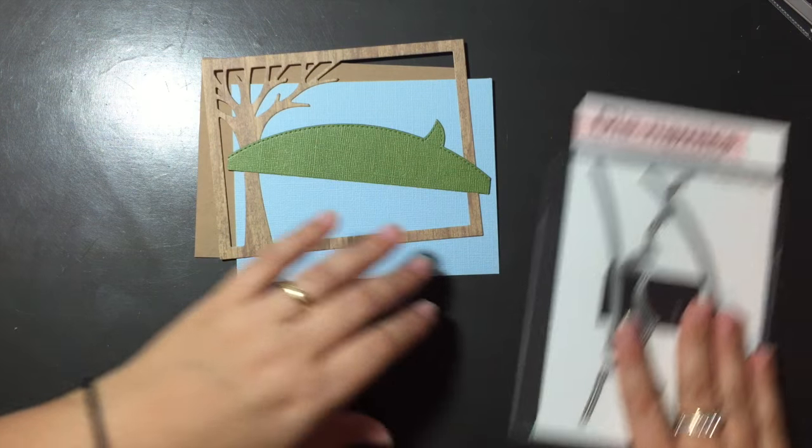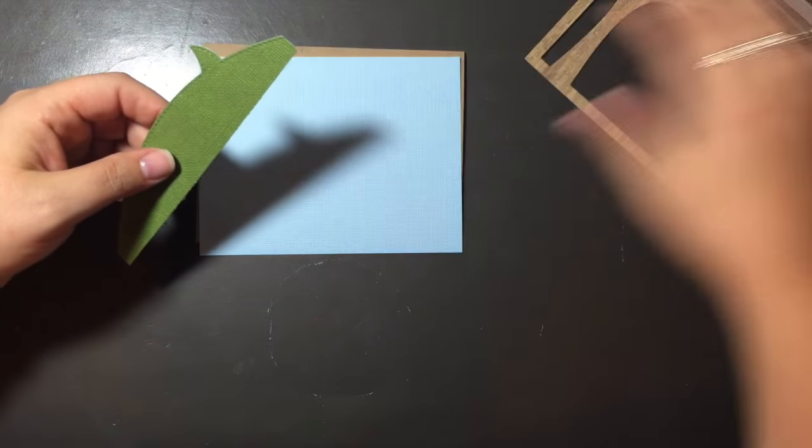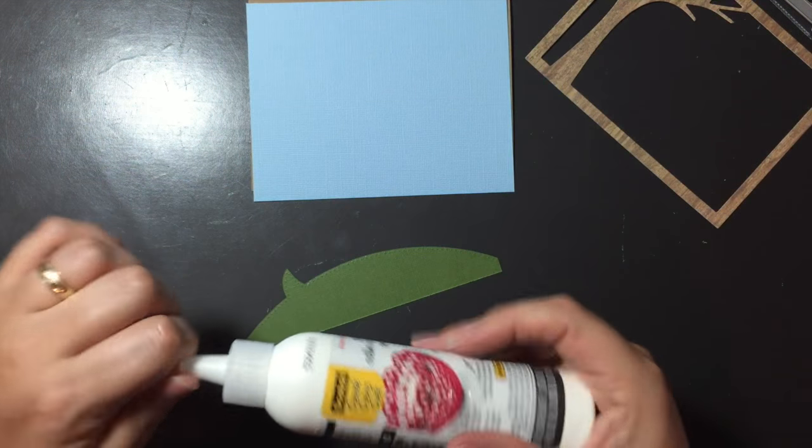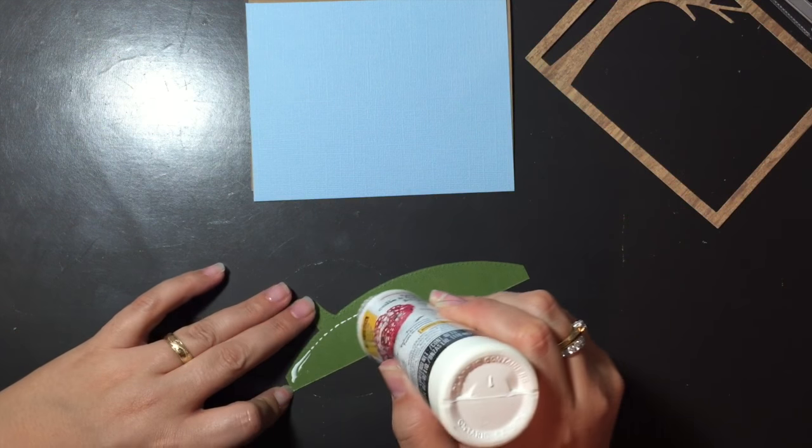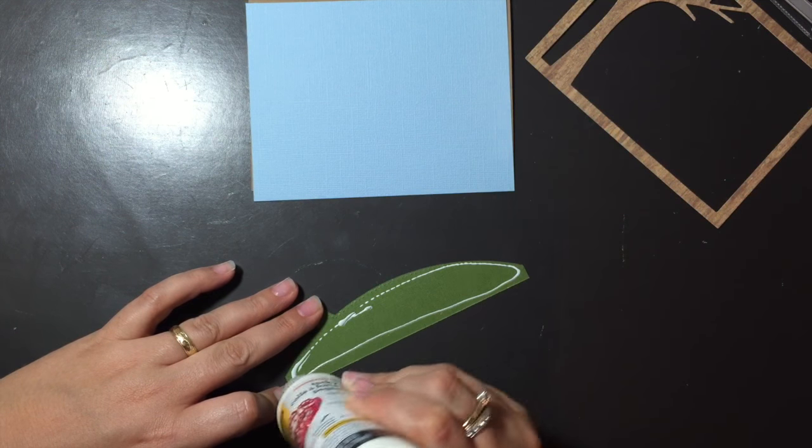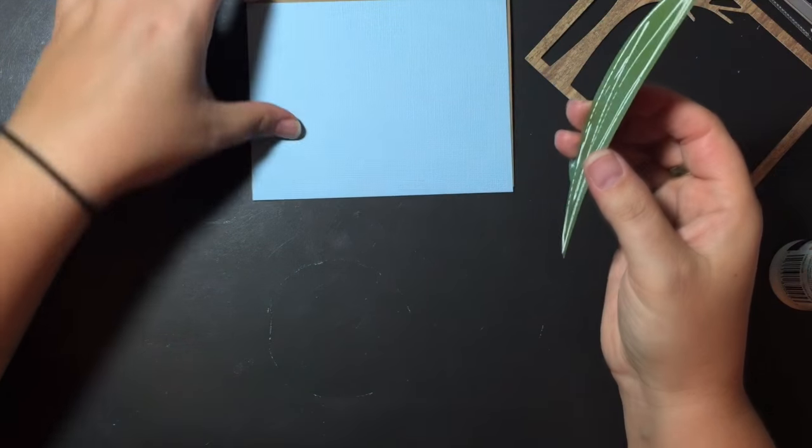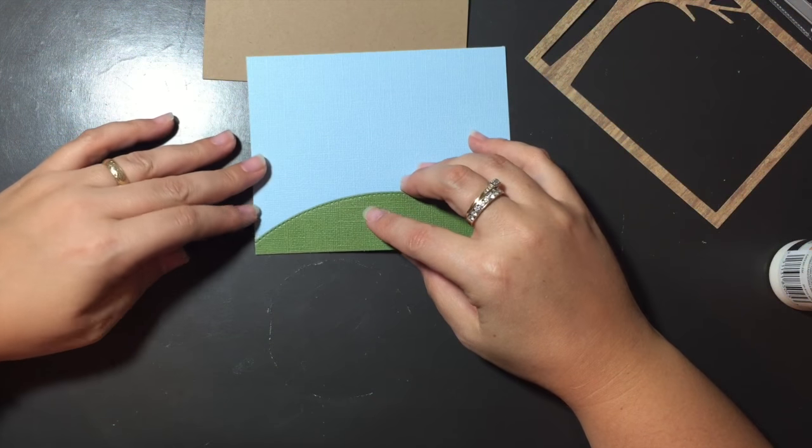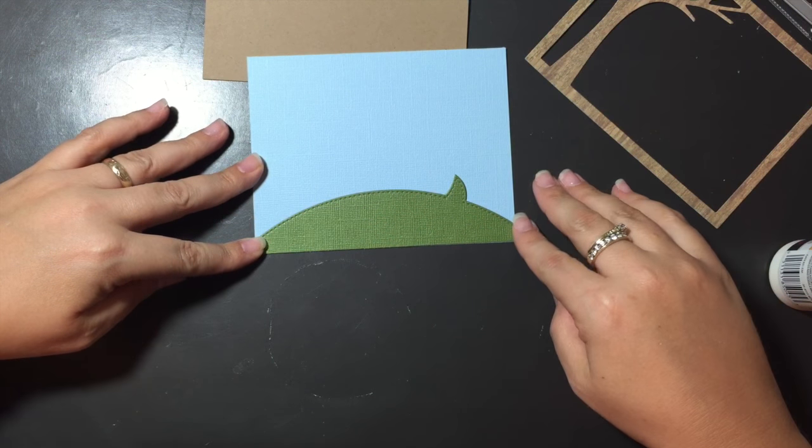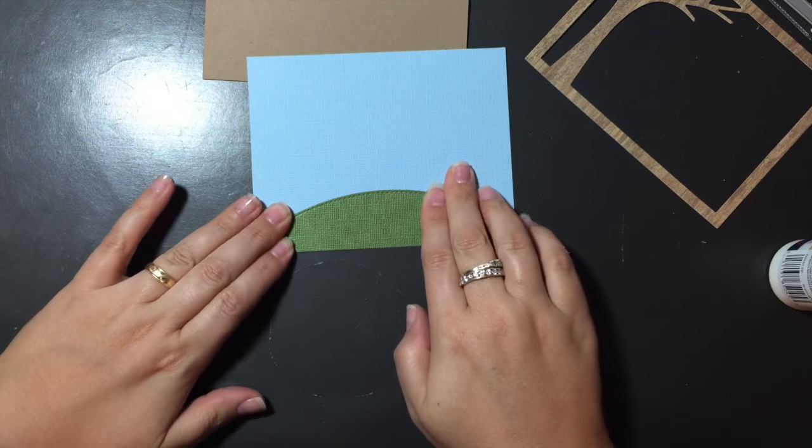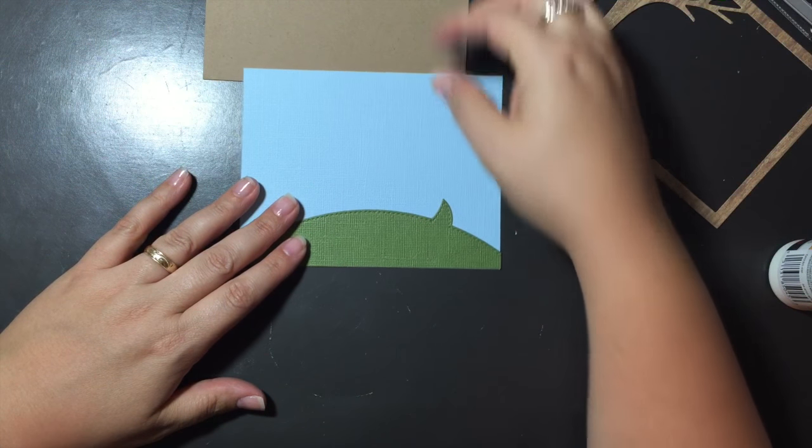So basically what I've done is I've cut it out in my green card stock. So I'm just going to show you, I'm going to glue it onto the blue paper. I'm just using my Scotch Quick Dry Glue here. Just lining it up on the bottom of the blue. And just, because I knew I was stacking these, I did just cut this slightly very slightly smaller than four and quarter by five and a half.